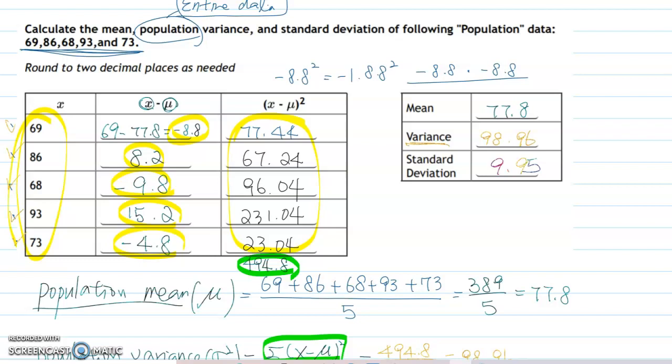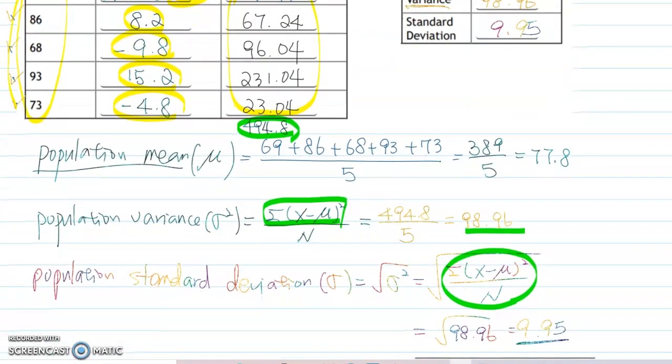Please remember that the formula is a little bit different here. In the population case, we divide by n, not n minus 1. That's the key point to distinguish between the sample and the population.